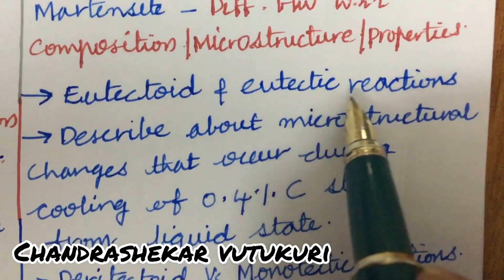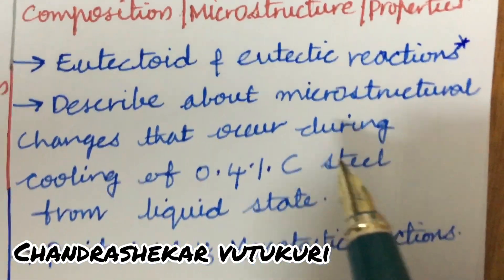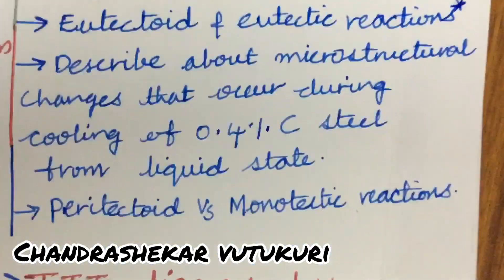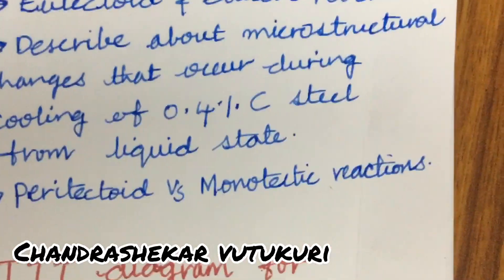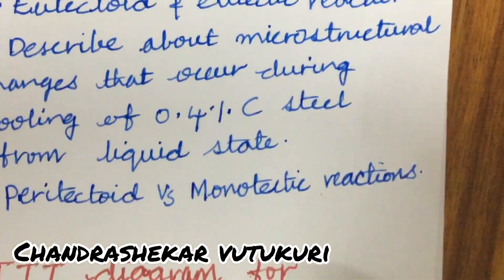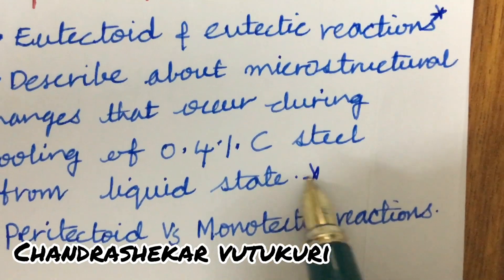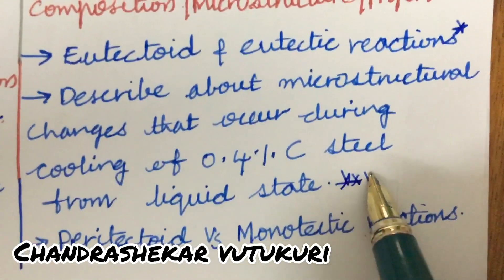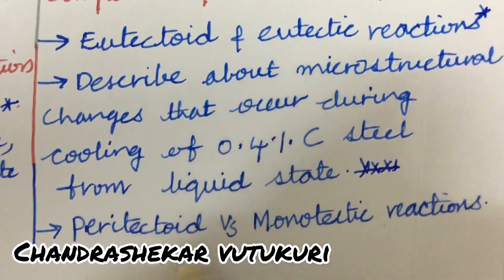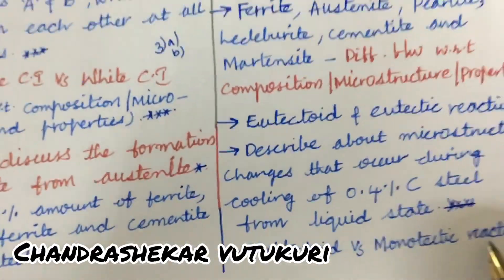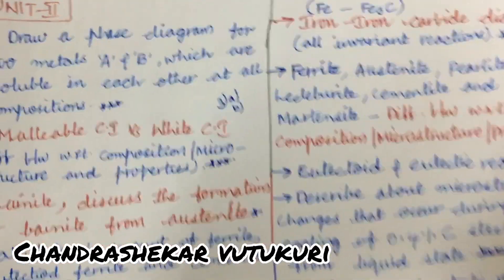Eutectoid as well as eutectic reactions is said to be very important. Describe the structural changes that occur during cooling of 0.4 carbon steel from a liquid state — this is also a very important gunshot question. Knowing the differences between the various reactions is key, and we can expect one and a half questions from Unit 2.